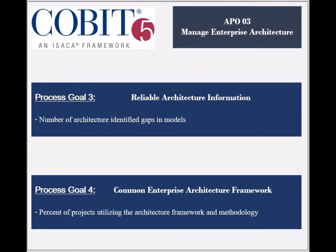The third goal is to ensure that reliable architecture information is provided. Its achievement is measured by the number of identified gaps in the different architecture models and by the customer feedback of the information quality. The fourth goal is to enable a common enterprise architecture framework and methodology. Its achievement is measured by the percent of projects that use the architecture methodology and by the number of trained people in its use.